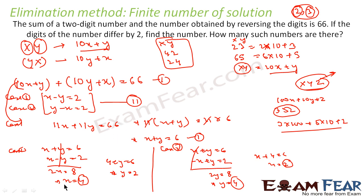To summarize: the original sum equation simplified to x plus y equals 6. The difference condition gave two cases: x minus y equals 2 giving the number 42, and y minus x equals 2 giving x equals 2 and y equals 4, the number 24.